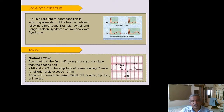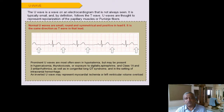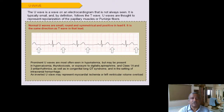The normal T wave is asymmetrical with a gradual first slope and steeper second slope, amplitude more than one-eighth and less than two-thirds of the corresponding R wave, rarely exceeding 10 mm. The U wave is a small deflection after the T wave, mainly seen in hypothermia and hypokalemia. In hypokalemia, the T wave becomes flat or inverted with prominent U waves and possible ST depression. A prominent U wave can also be seen in hypercalcemia, thyrotoxicosis, digoxin exposure, congenital long QT, and raised intracranial pressure.